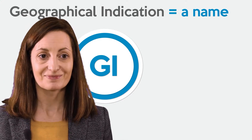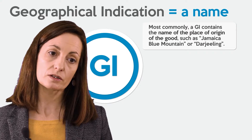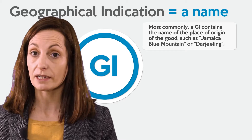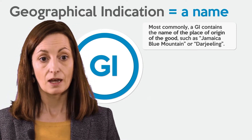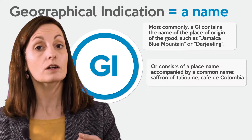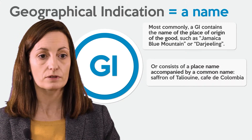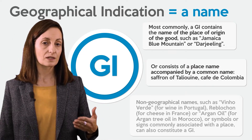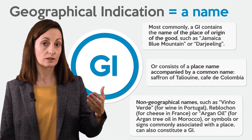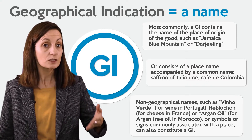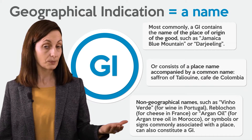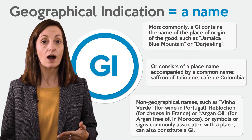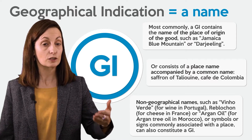A GI is also a name. Most commonly, a geographical indication consists of the name of the place of origin of the good — for instance, Jamaican Blue Mountain or Darjeeling — or it can be a name accompanied by a common name, such as Saffron of Taliwin in Morocco or Café de Colombia. Non-geographical names can also be considered as geographical indications if they are linked to a place of production of the product, such as Vinho Verde in Portugal, Reblochon for cheeses in France, or Argan for Argan tree oil in Morocco.